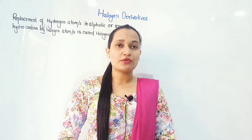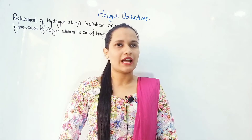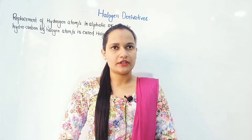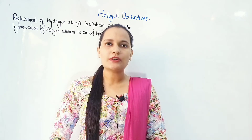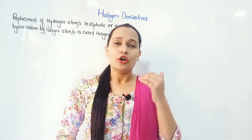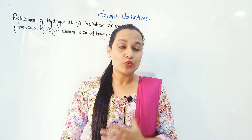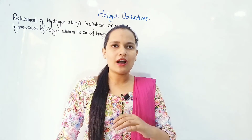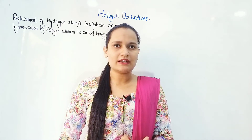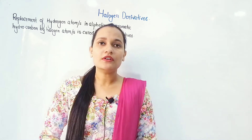I am Rubina Chaudhary and today I am going to start the first chapter from organic chemistry for Class 12 students. Today we are going to talk about halogen derivatives. We have done some basic parts of organic chemistry in Class 11, and now there are some basic concepts which you will see in this chapter. This is your first chapter of Class 12 organic chemistry and it is somewhat easier compared to the other chapters.